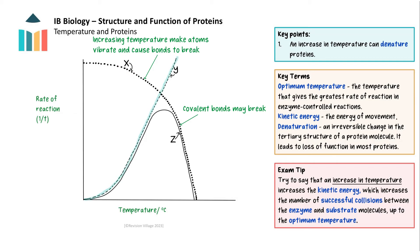The combination of line Y and line X results in the rate of reaction curve shown by line Z. The rate of reaction increases up to an optimum temperature. Then, above this temperature, the change in the shape of the 3D structure outweighs the benefit of the increased kinetic energy of the enzyme and substrate molecules, and denaturation takes over as the main influencer of the rate of reaction.